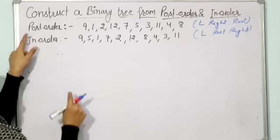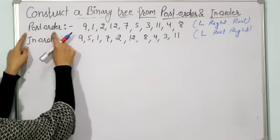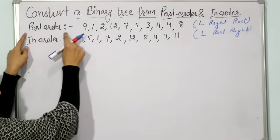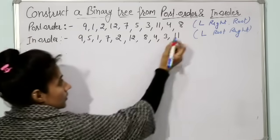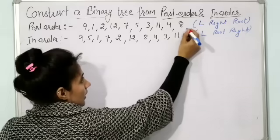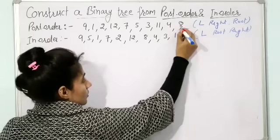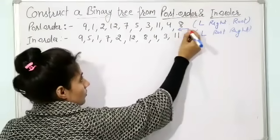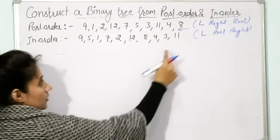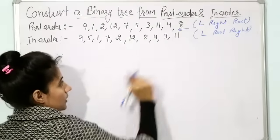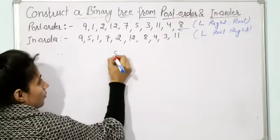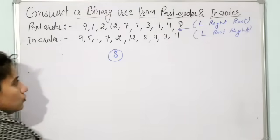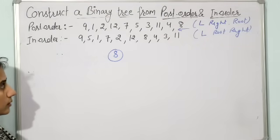In pre-order, we scan from left to right. But in post-order traversal, you scan from right to left. The starting element when scanning right to left is 8, so 8 would be the root of our binary tree.